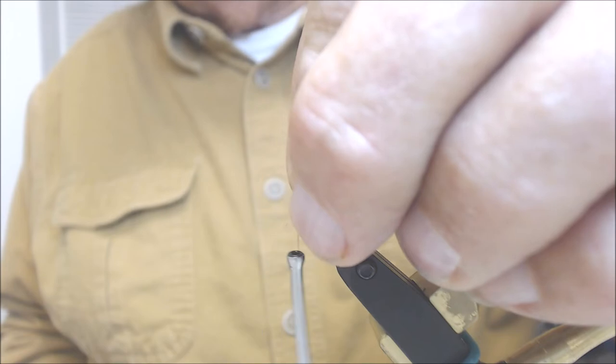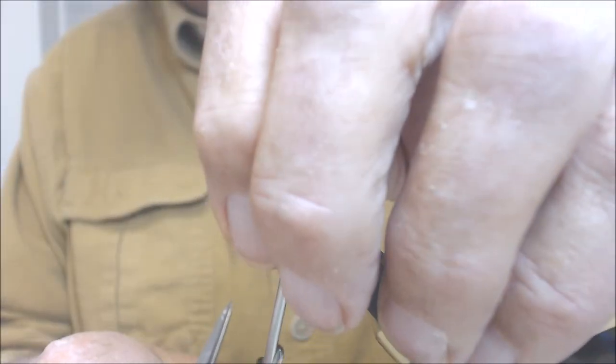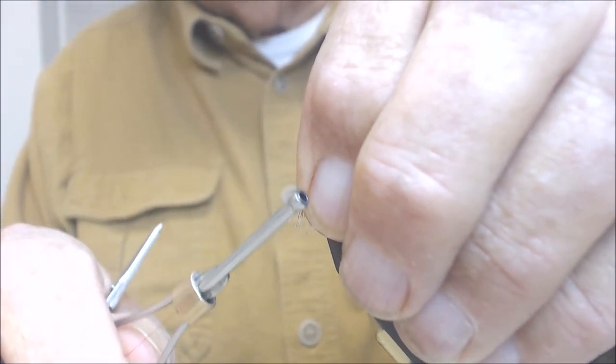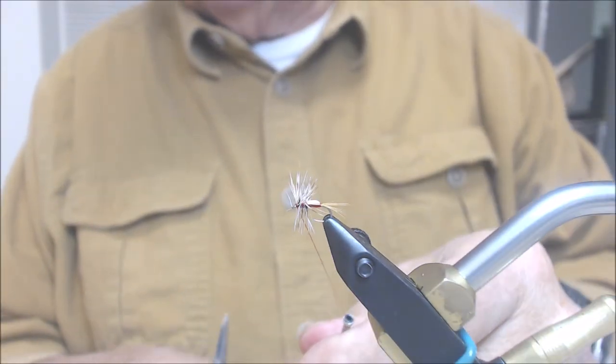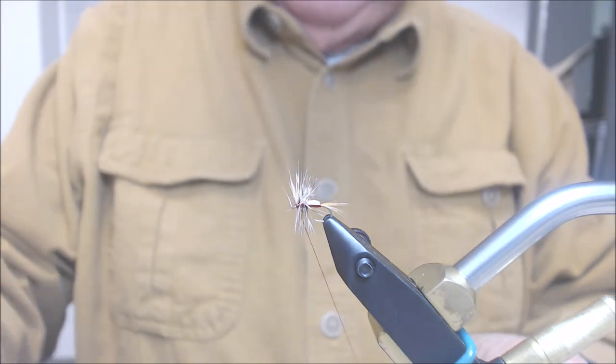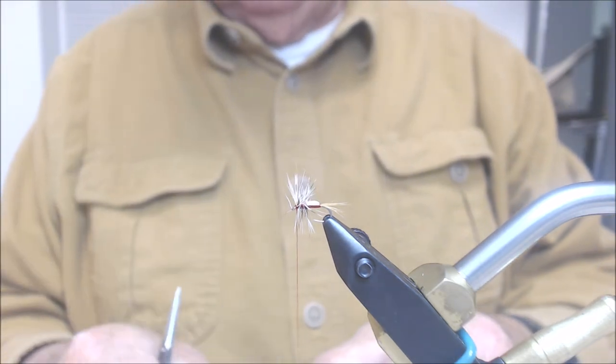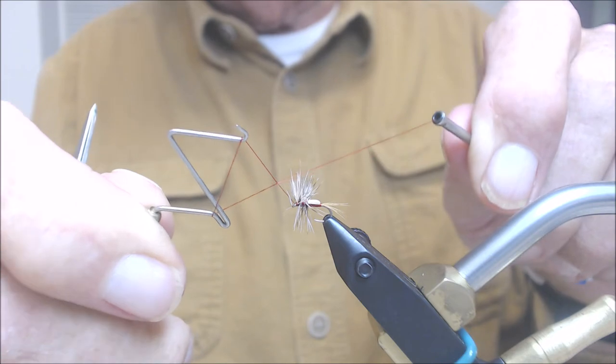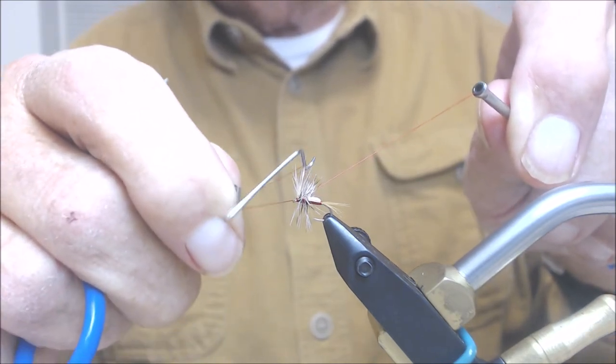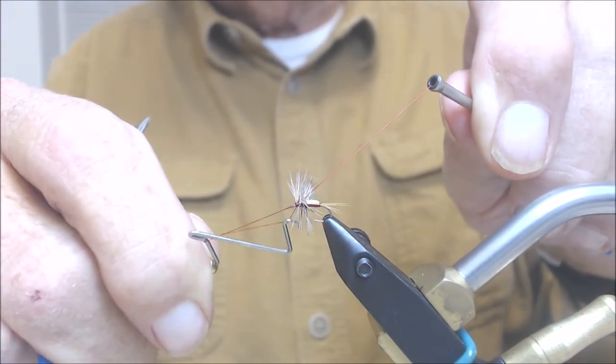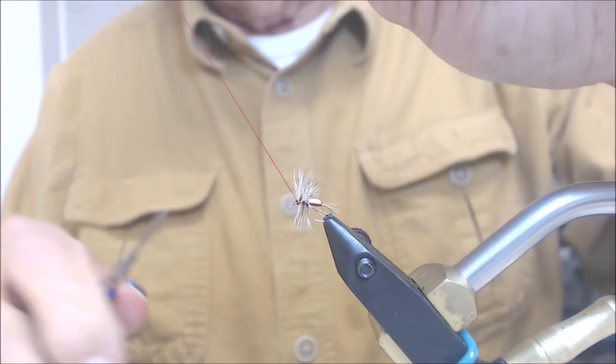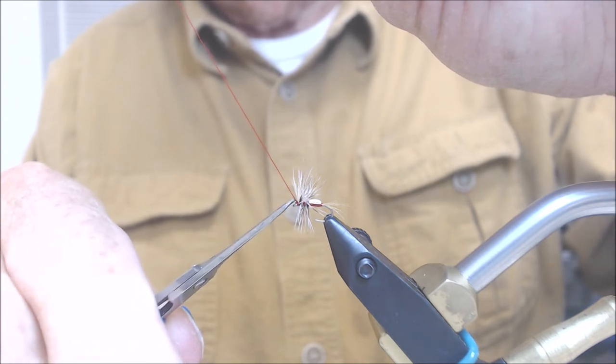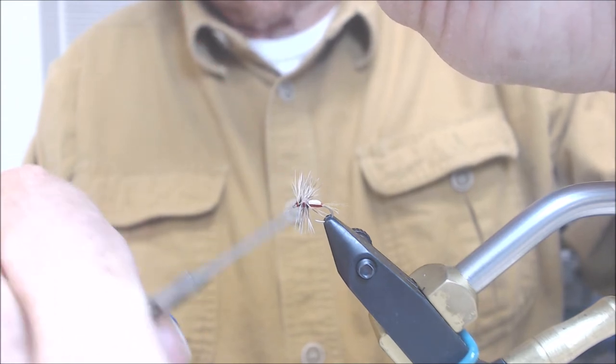We'll go ahead and clip the hackle. Now I'm going to take my fingers and I'm going to pull this deer hair backwards towards the back, and it'll make two or three wraps right in front. I'm going to tie it off, clip it.